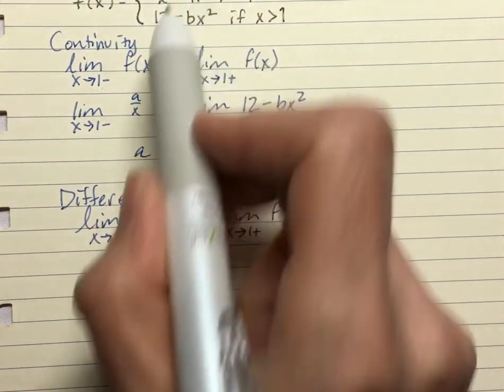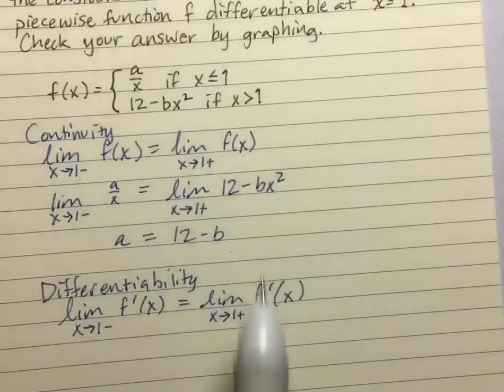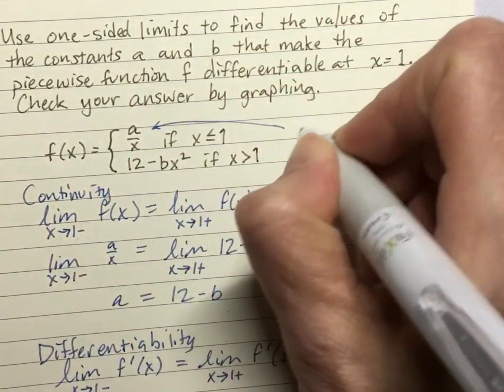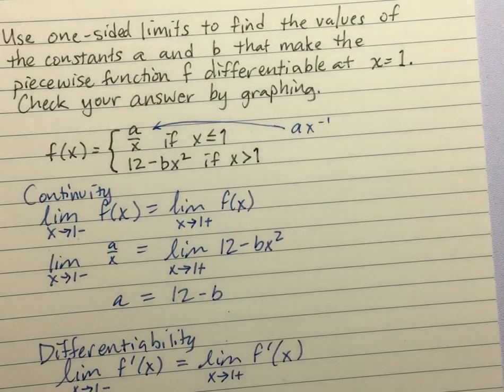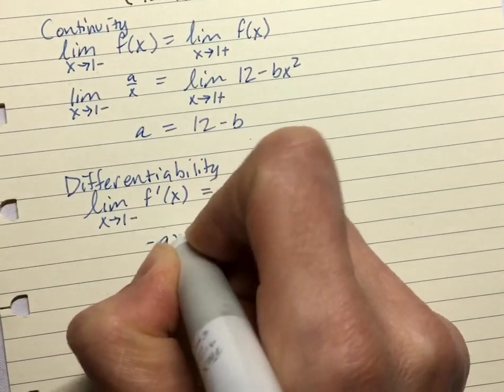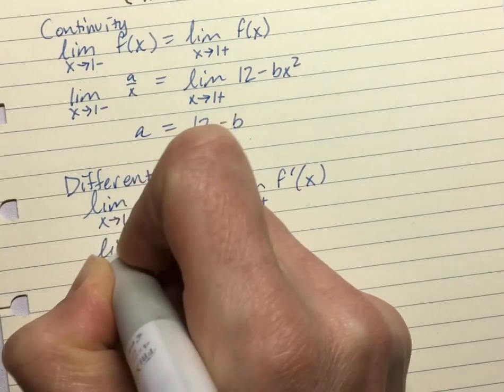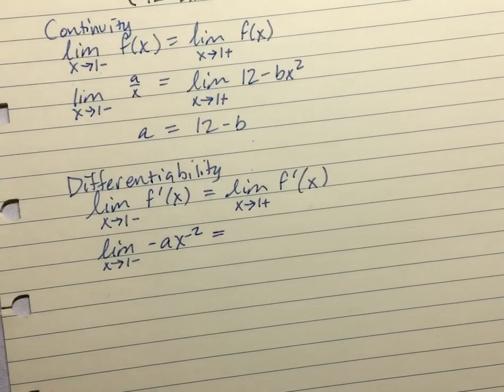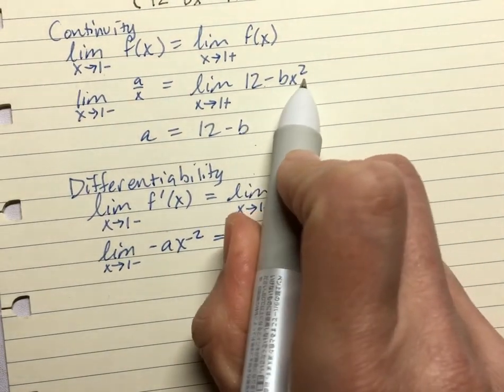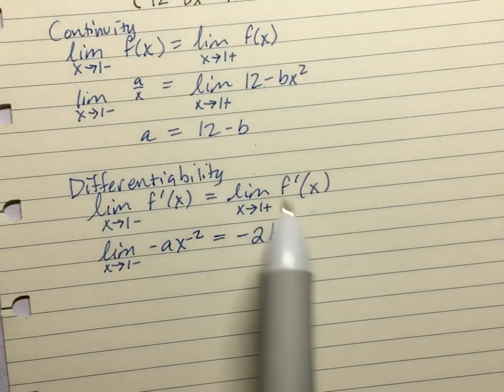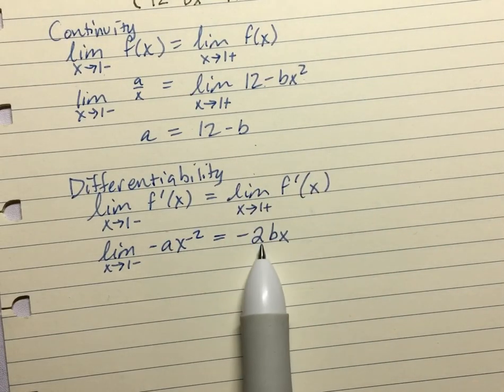So I'm going to take the derivative. Remember that a over x is really ax to the negative 1. So taking the derivative of ax to the negative 1, it's negative ax to the negative 2. And I still have my limit notation because I haven't taken it yet. And then on the right, I'm taking the derivative of 12 minus bx squared. So I have negative 2bx.